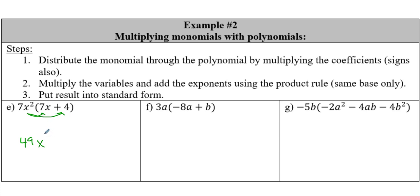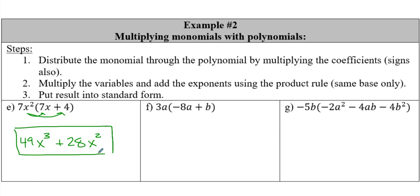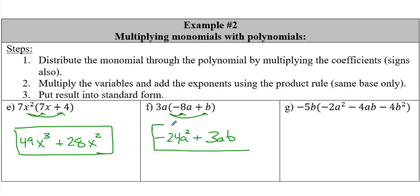So 7x squared times 7x: a 7 and a 7 multiply to give 49, and x to the 2 plus x to the 1 gives x to the third. Then 7 times positive 4 is positive 28, and we just bring down x squared since there's no other x to multiply here. Next: 3a times negative 8a. I see 3 times negative 8, which gives me negative 24, and a times a gives a squared. Then 3a times b gives just 3ab.